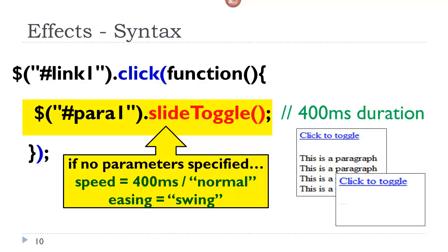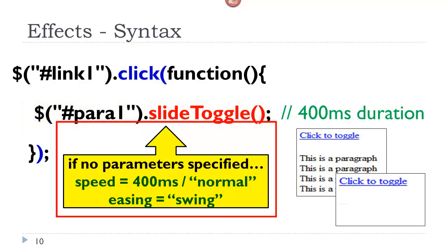I am clicking on a link, and the paragraph is the selector, and the slide toggle method is sliding it open and sliding it closed. Here again, no parameters are specified, so I have a 400 millisecond speed, and the easing is swing, which essentially means it goes from slow to fast at the end. Although it happens so fast, you really don't see a difference.